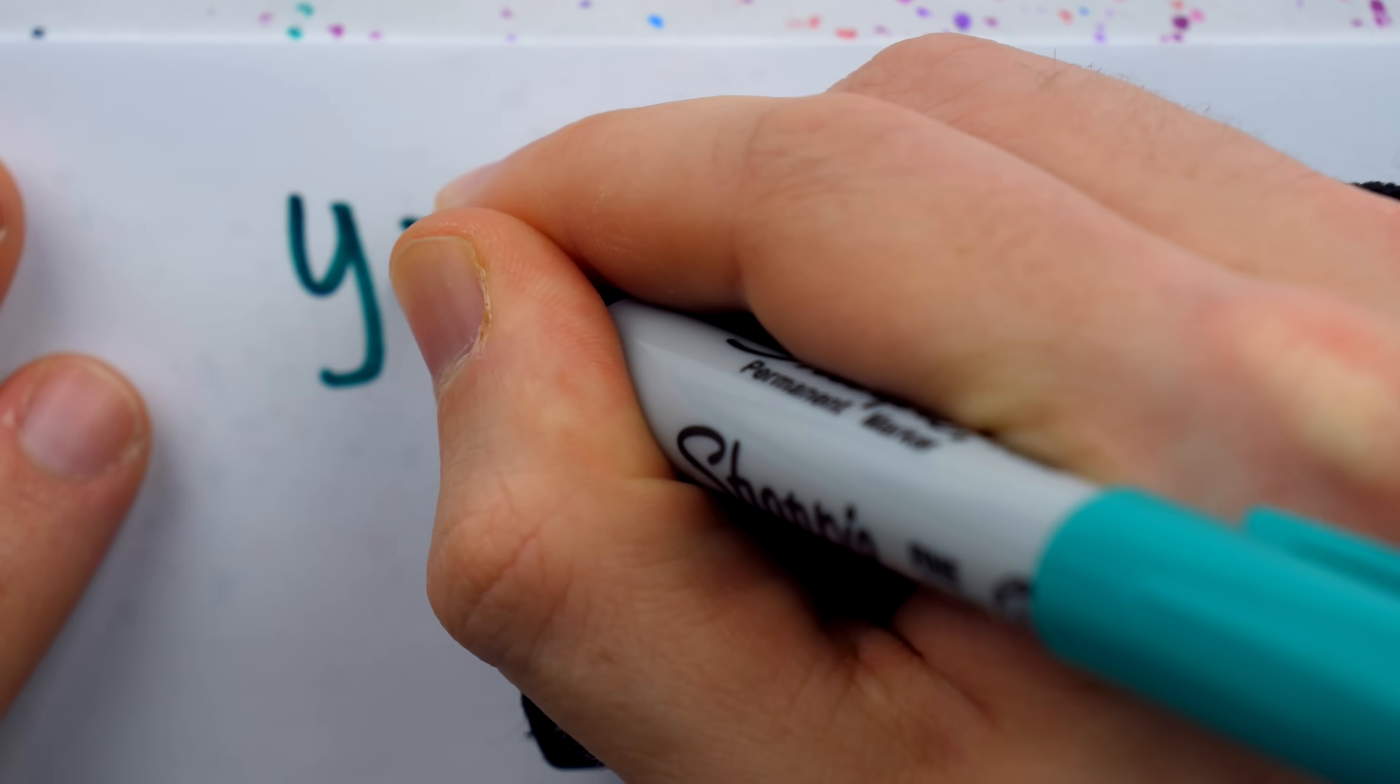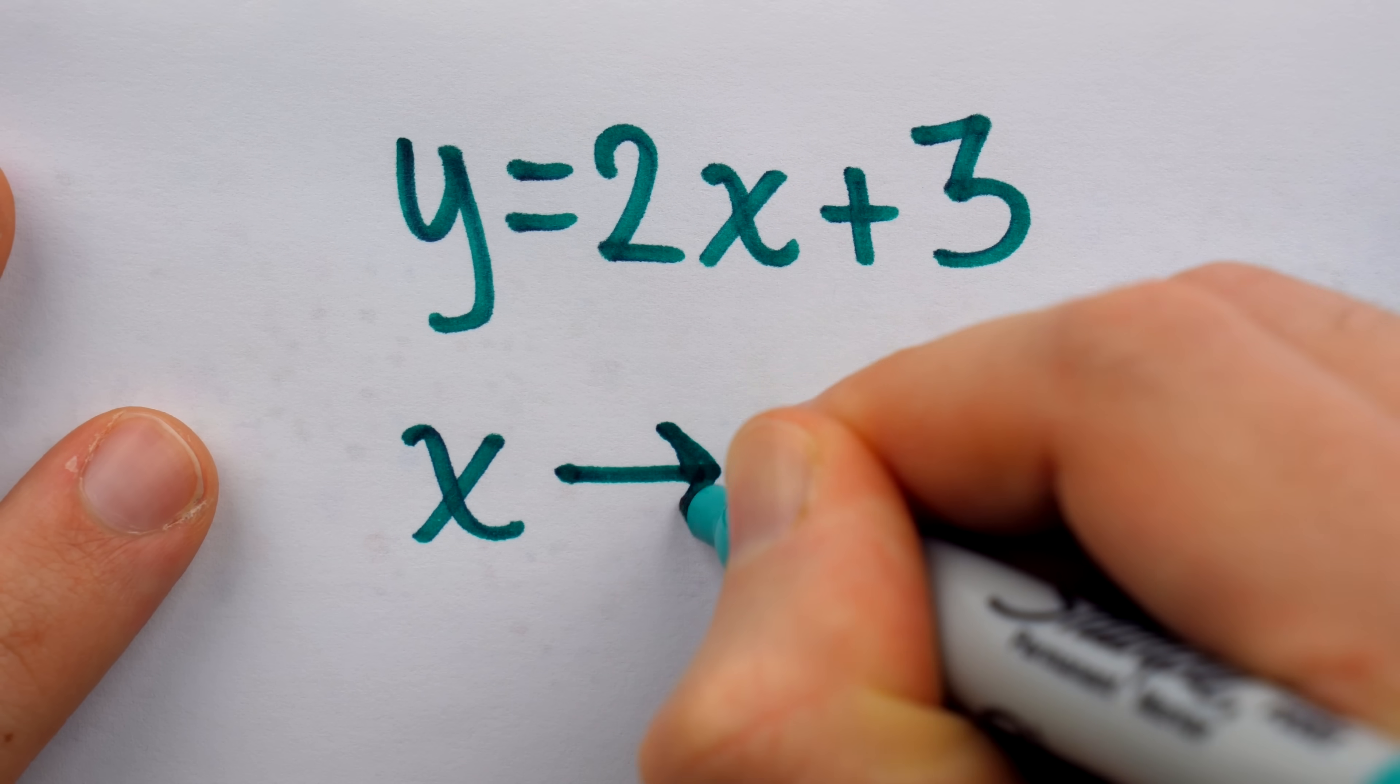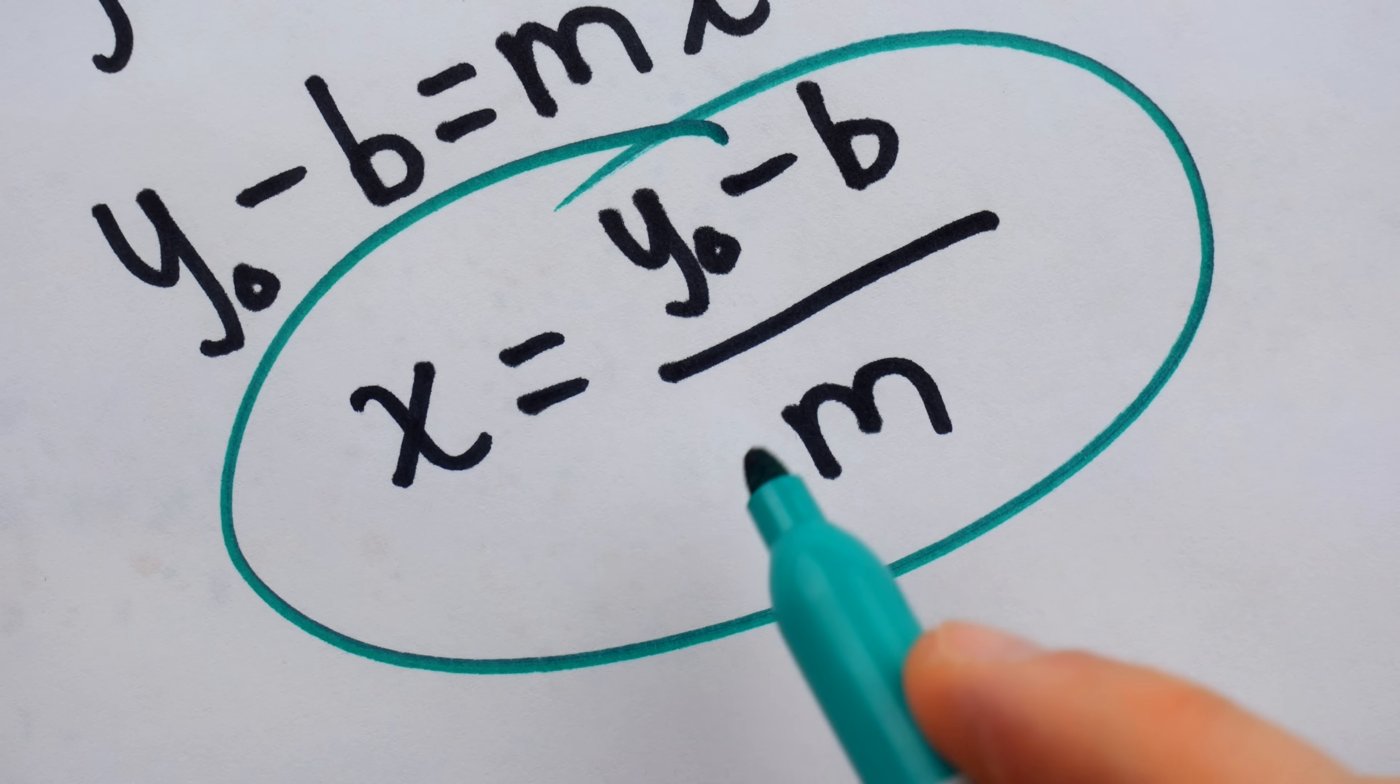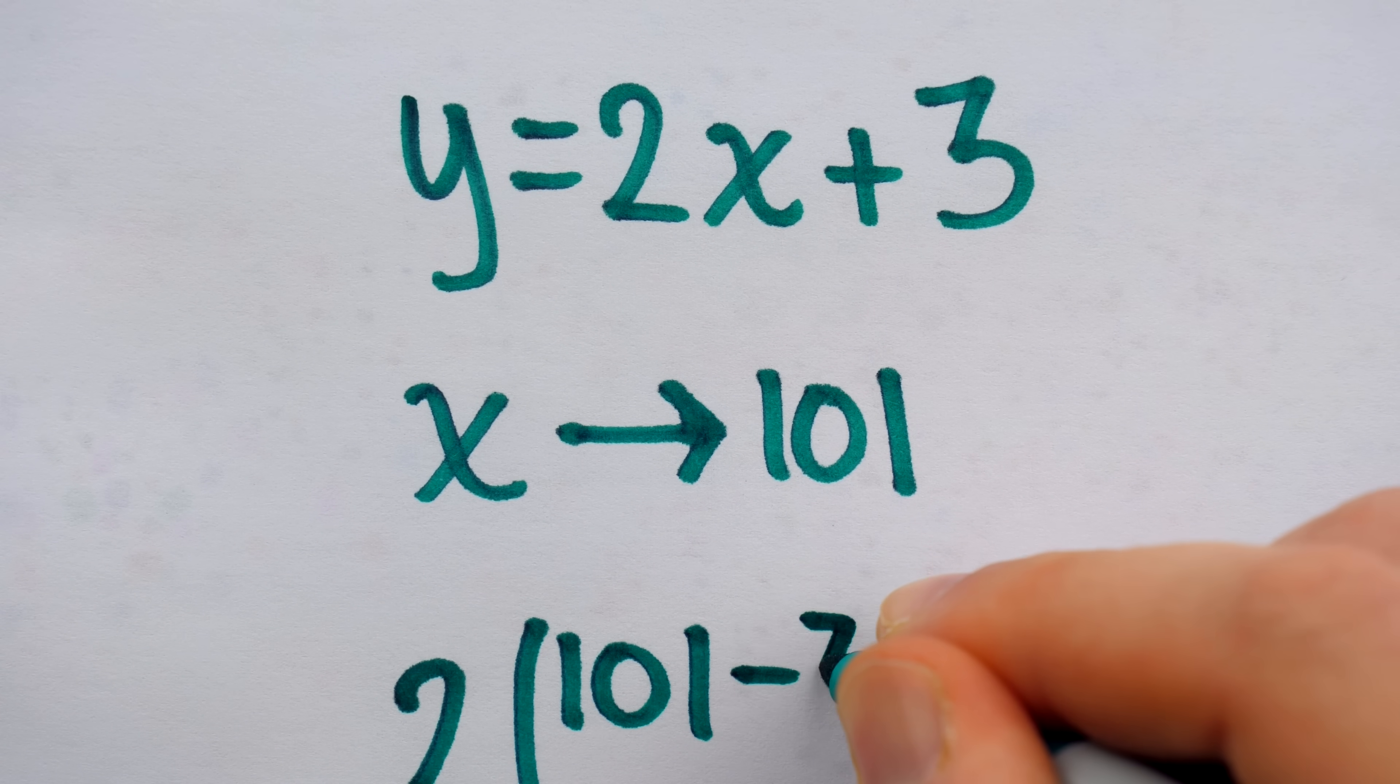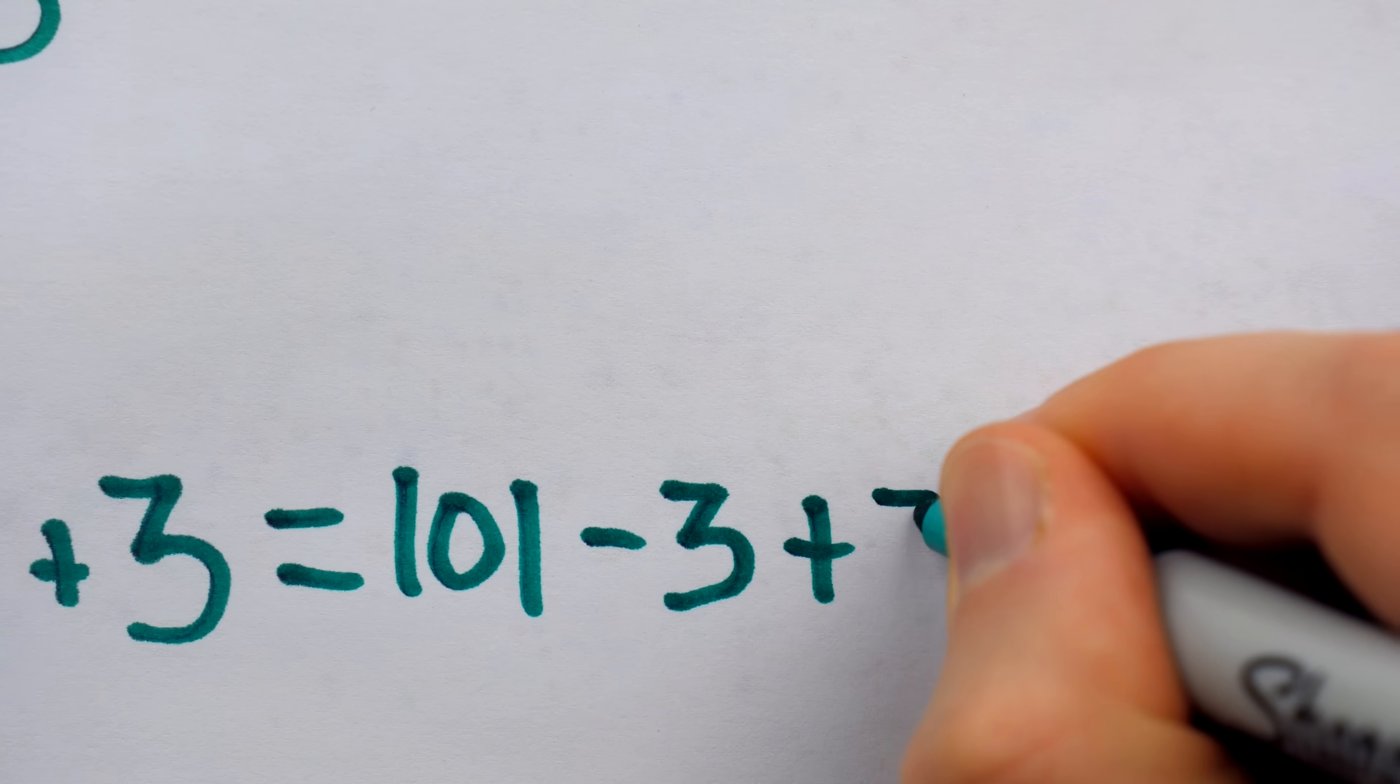Say y equals 2x plus 3, and we want to find the x that produces a y of 101. Just follow this formula. So for x, we plug in 101 minus 3 divided by 2,